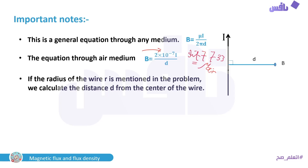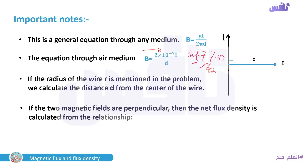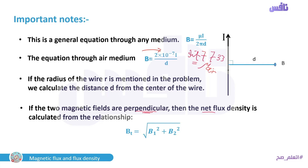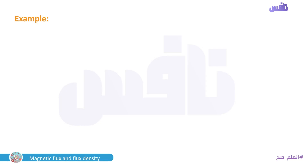Number three — if the radius r of the wire is mentioned, calculate distance d from the center of the wire. Finally, if the two magnetic fields are perpendicular, the net flux density is: B_total = √(B₁² + B₂²). Note that 'total,' 'net,' and 'resultant' all mean the same thing.